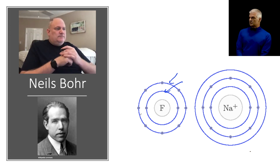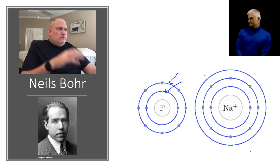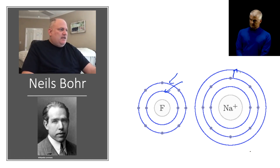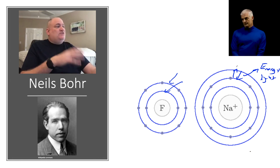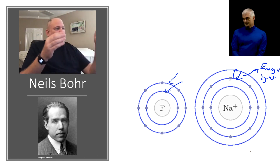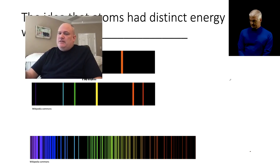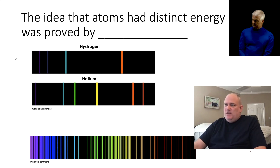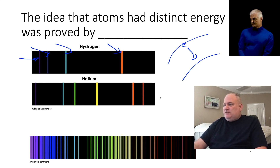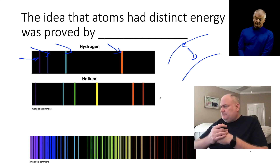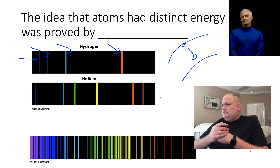Bohr came up with the idea of energy levels or shells — essentially circles around the nucleus. Electrons travel in those circles, and if they gain or lose energy they can move up or down between energy levels. He proved this because when electrons jump up and fall back down, they give off energy in the form of light. You can see specific lines in a spectrum — for hydrogen, there are four distinct lines, each representing an energy drop from a higher to lower energy level.